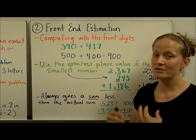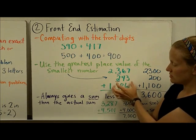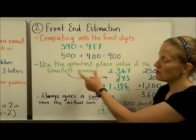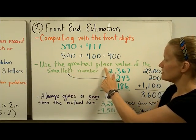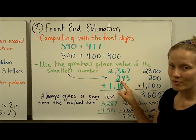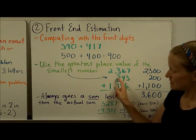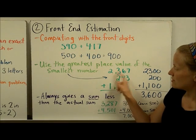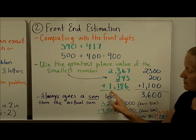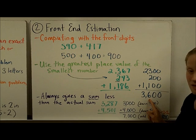One thing to keep in mind: if you have a set of numbers where you don't have the same number of digits in each one — for example, if you have four digits, three digits, four digits — the rule we use is to use the greatest place value of the smallest number. So in this example, 243 is the smallest number, so I'm going to keep all the way to the hundreds place in each of them. That means this number in front-end estimation becomes 2,300, this one changes to 200, and this one changes to 1,100, giving a sum of 3,600.